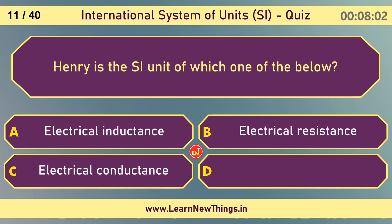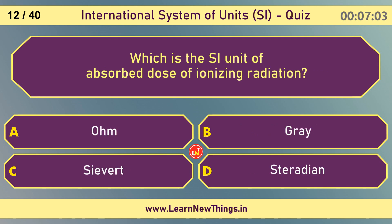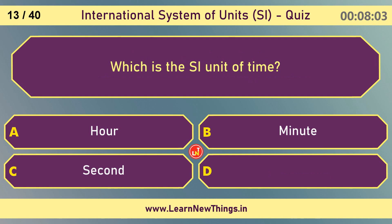Henry is the SI unit of which one of the below? Electrical inductance. Which is the SI unit of absorbed dose of ionizing radiation? Gray. Which is the SI unit of time? Second.